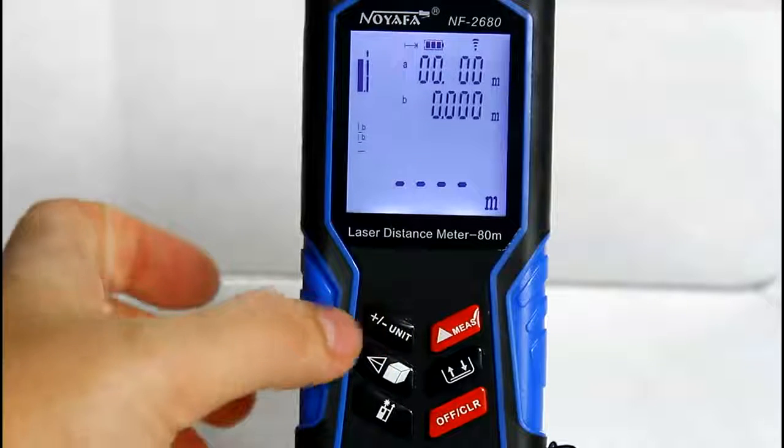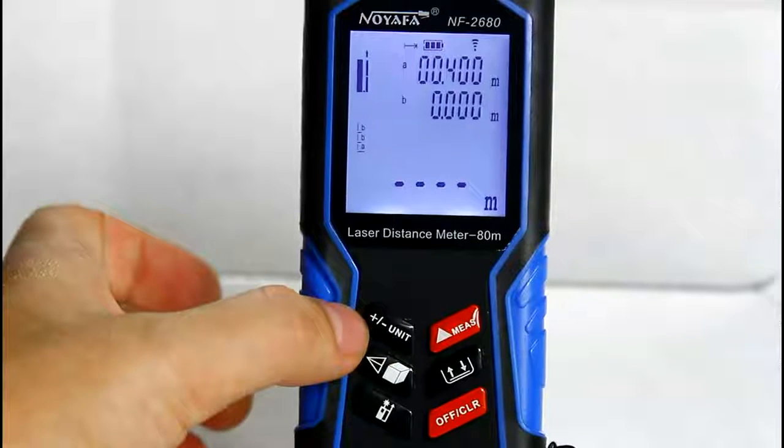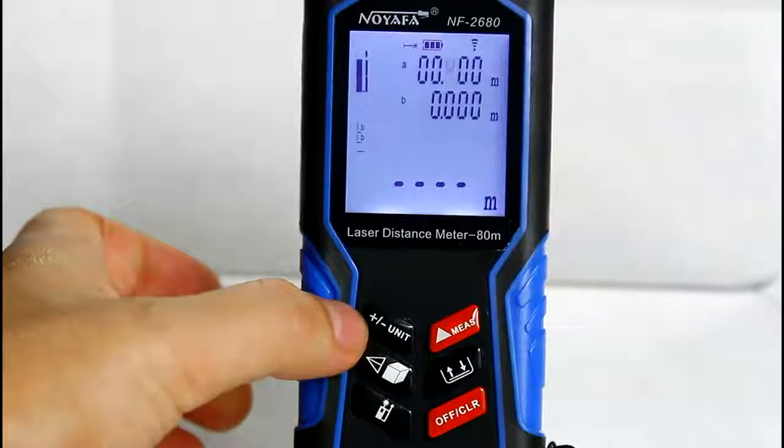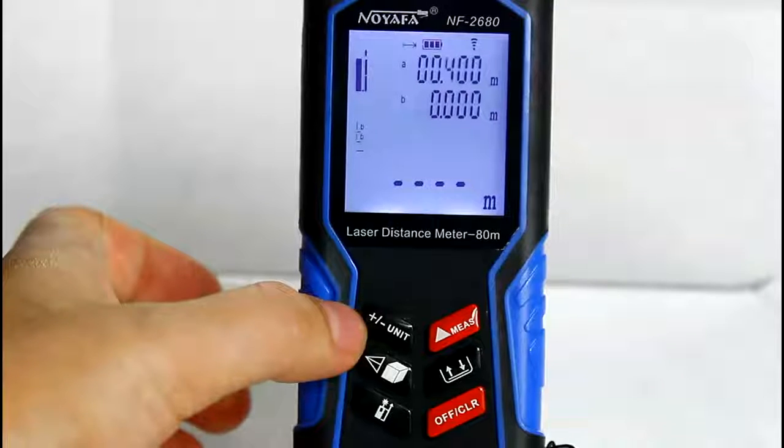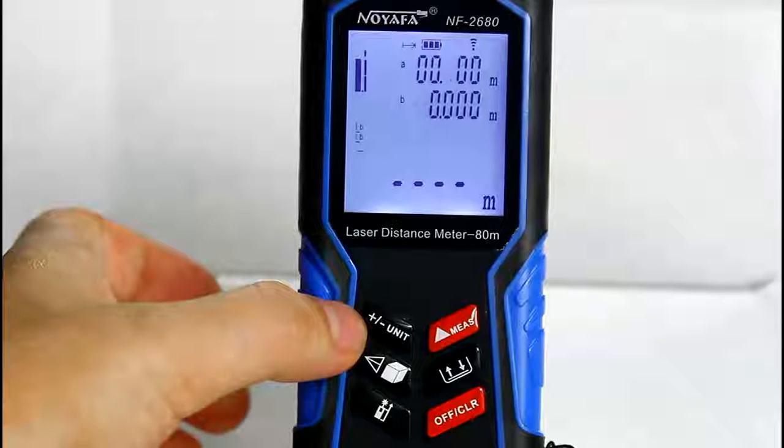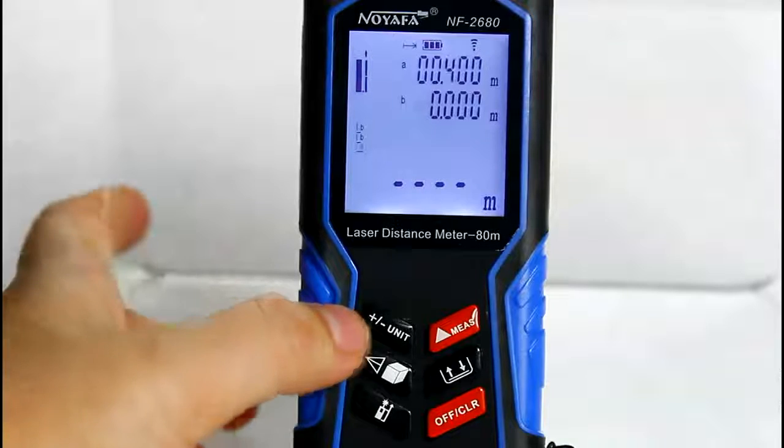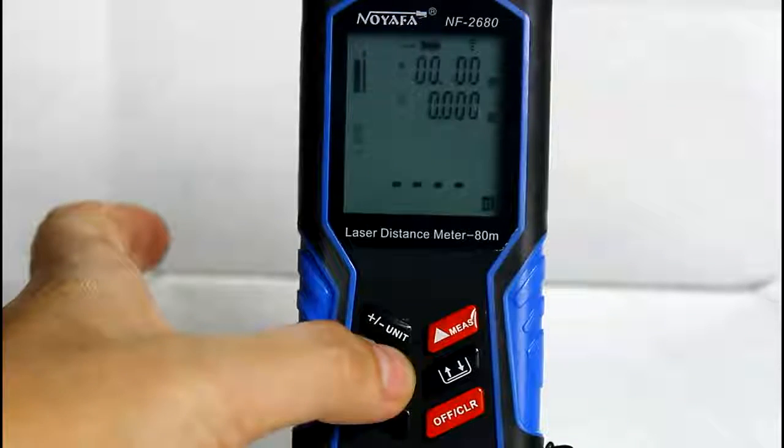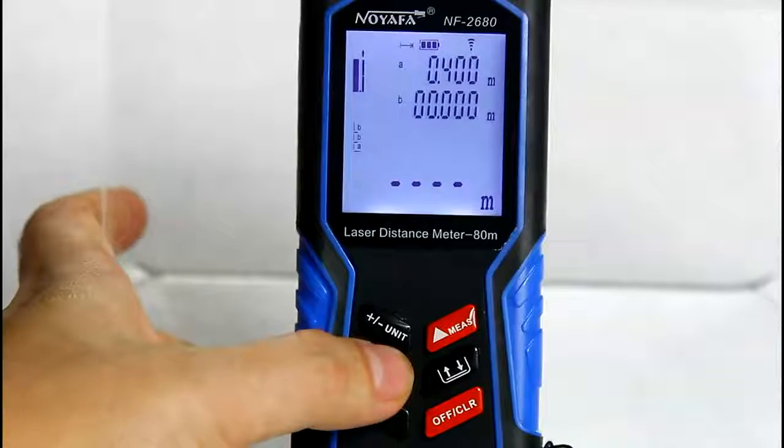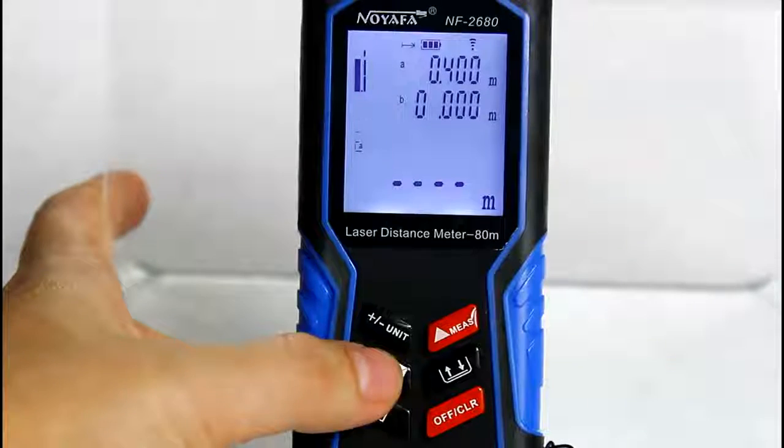Press plus and unit button to adjust the whole number. Press MEAS to adjust the decimal digits. Now, we set B to 0.6 meters.